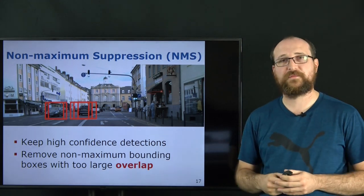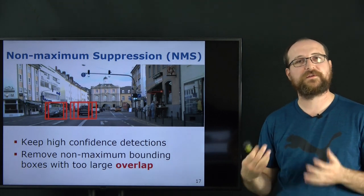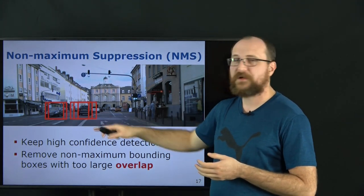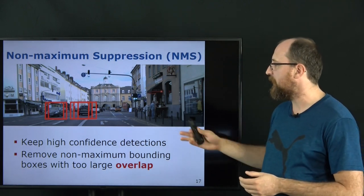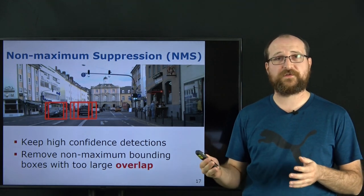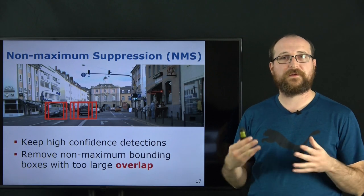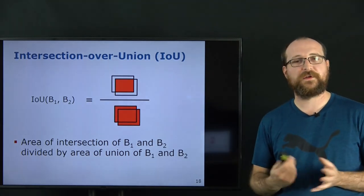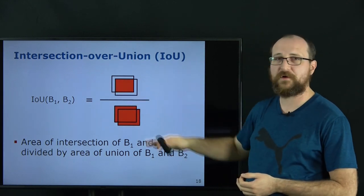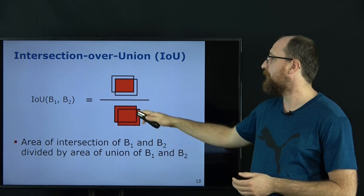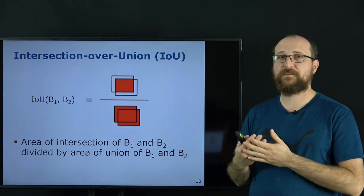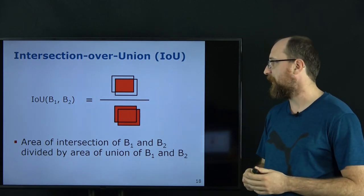To handle multiple detections of the same object, we apply non-maximum suppression (NMS). NMS removes bounding boxes that are not the highest confidence detection in a region. For this, we use the concept of intersection over union (IoU), which computes the intersection of two bounding boxes divided by their union. This gives a value between 0 and 1 — higher means more overlap, lower means less overlap.